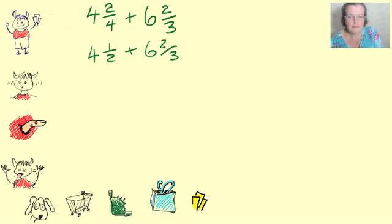So, now we'll do the whole numbers. 4 and 6 is 10 and a half plus 2 thirds. What number will 3 and 2 both go into? Because we're making, and we don't need to make an improper fraction, do we? Because we're not taking from anything. But we do need to find a common denominator, something that they have in common. So, we'll put it over 6.